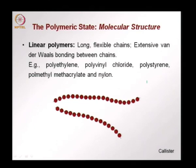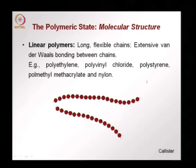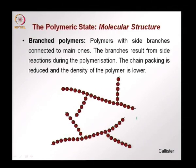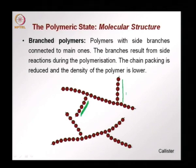There are different types of molecular structures. The simplest is a linear polymer, with long flexible chains and extensive van der Waals bonds between the chains. This occurs in many common polymers such as polyethylene, PVC or polyvinyl chloride, polystyrene, polymethyl methacrylate and nylon. Branched polymers have side chains branching off the main chain due to side reactions during polymerization. Such structures are more difficult to order and become crystalline than linear polymers.